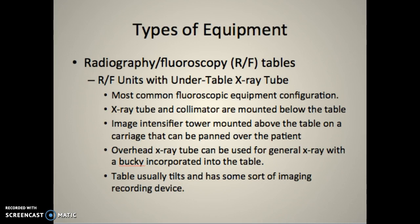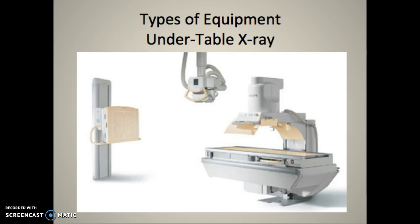The image intensifier is mounted above the table and usually has a drive so the doctor can drive the table and view the body. There's an overhead tube for general X-ray with a bucky within the table - it's very important to move the bucky tray all the way down to the end of the table or it will appear in your images. The table also tilts and has a recording device. You can see the X-ray under the table, the image intensifier, and a free-floating tube.